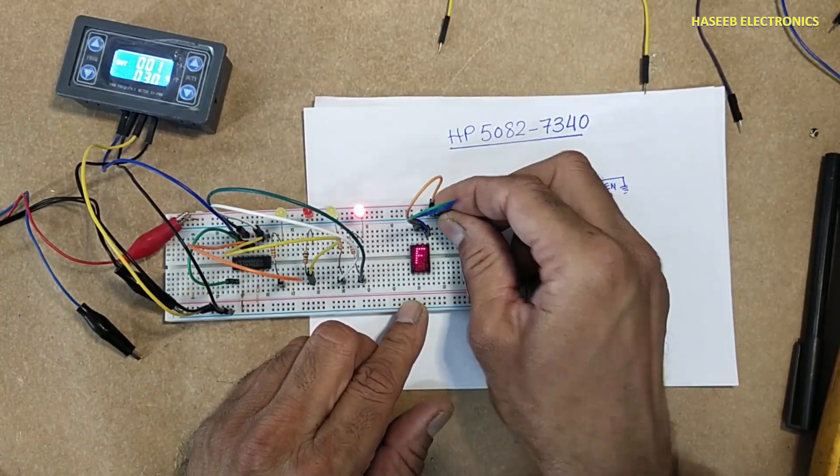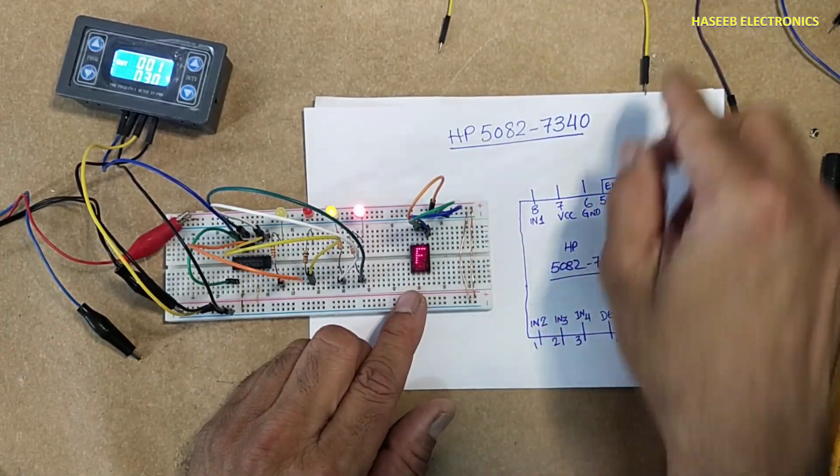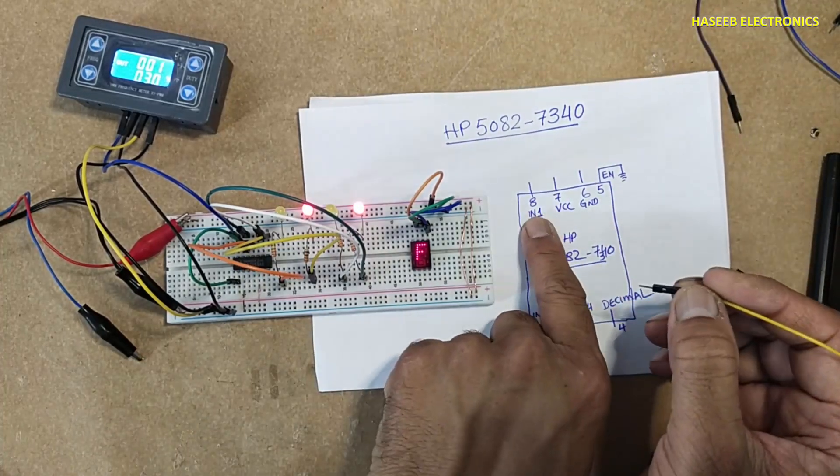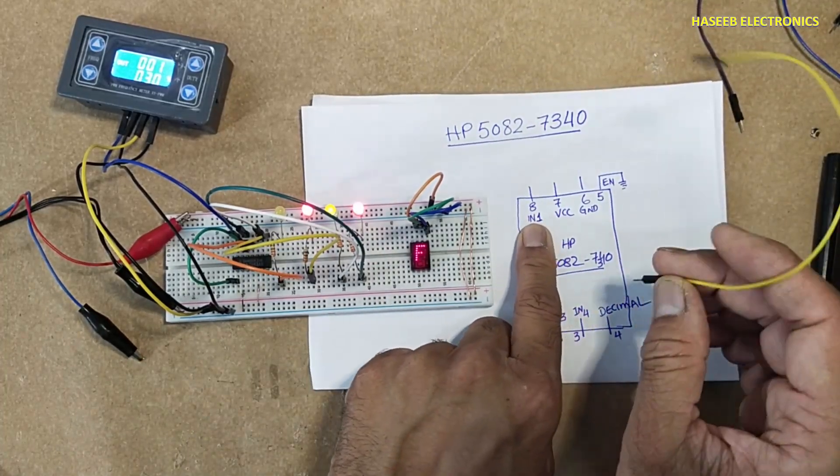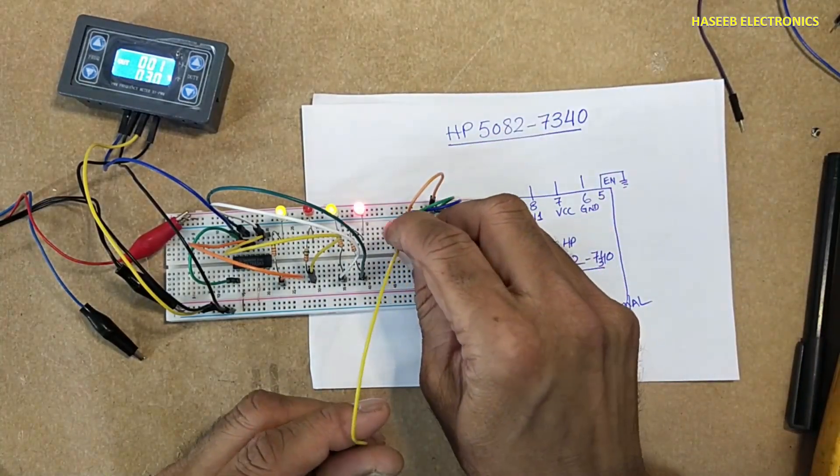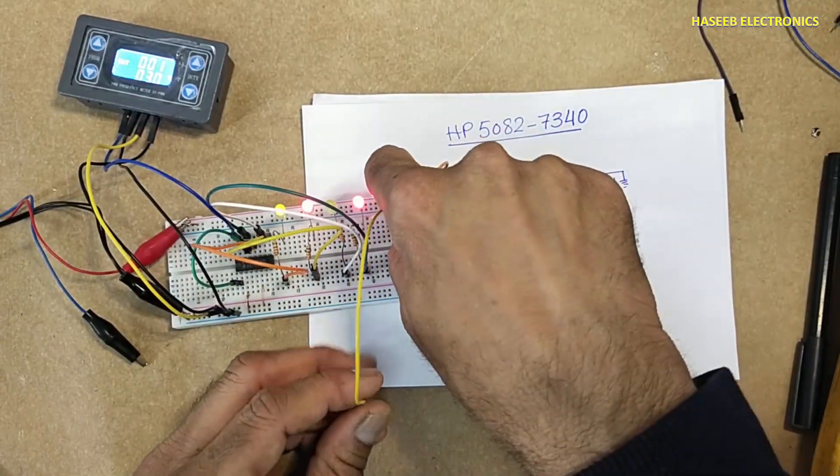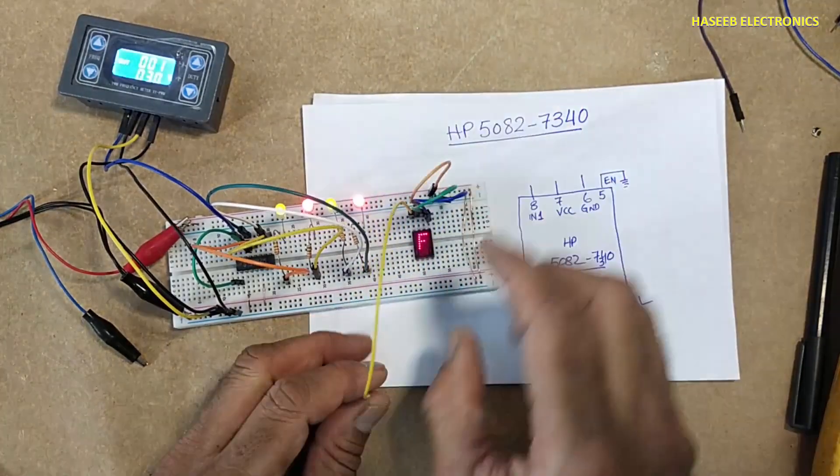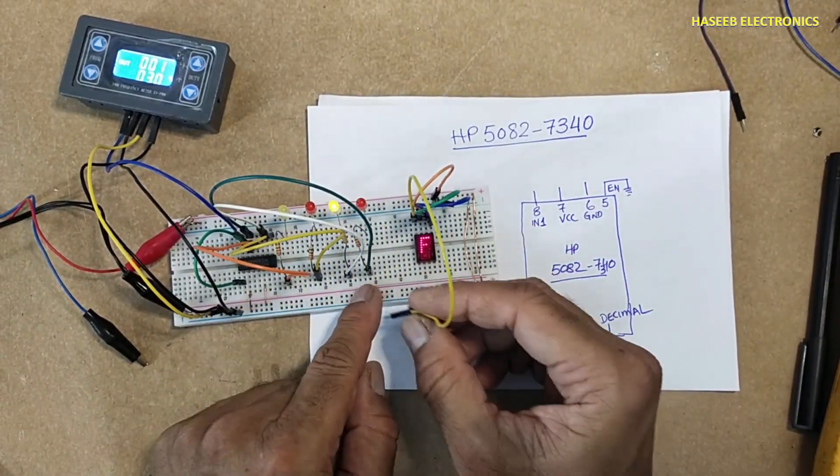Five and six are connected to ground. Now we will connect in one, that is pin number eight. We will connect it to low side bit, that is first bit here.